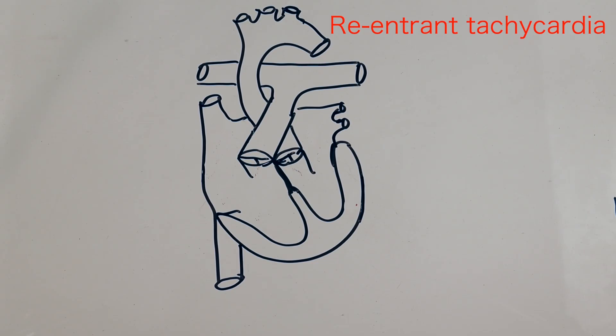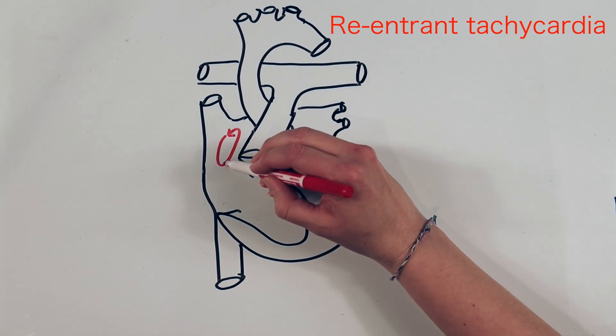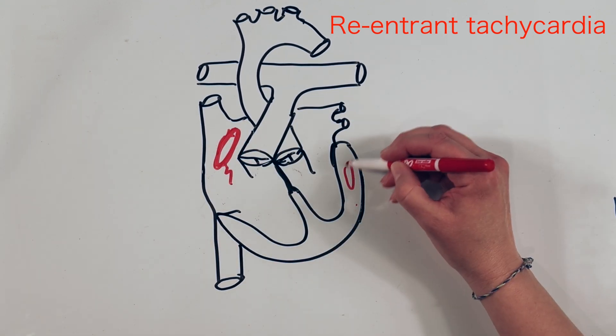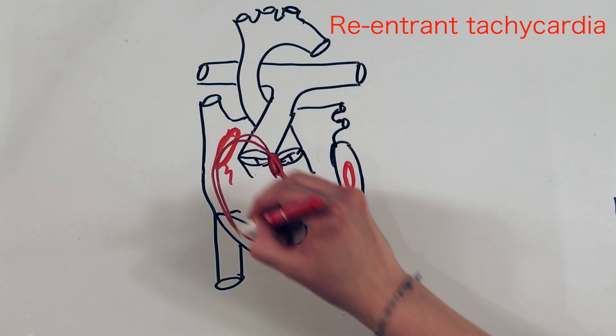Briefly, re-entrant arrhythmias are a circuit of electricity through the heart resulting in an abnormal rate. They can be completely contained within the atria, contained entirely within the ventricle or AV node, or pass between both the atria and the ventricle.